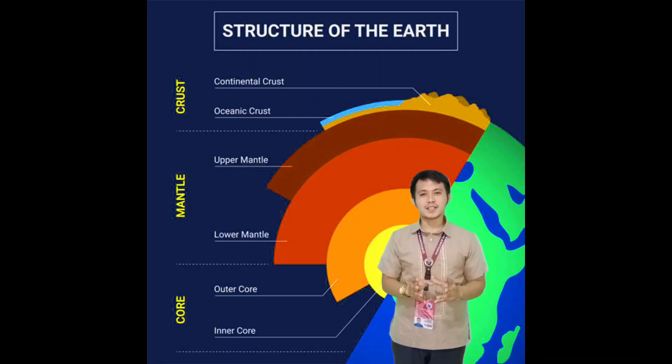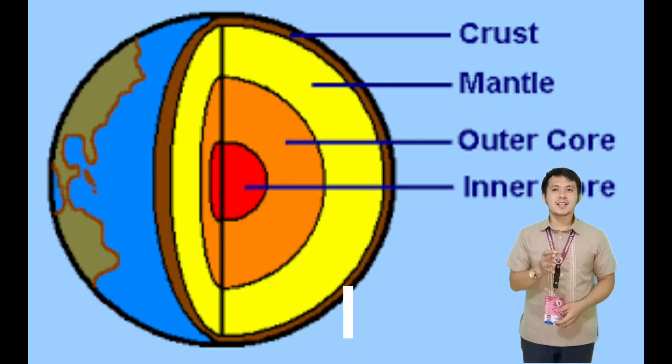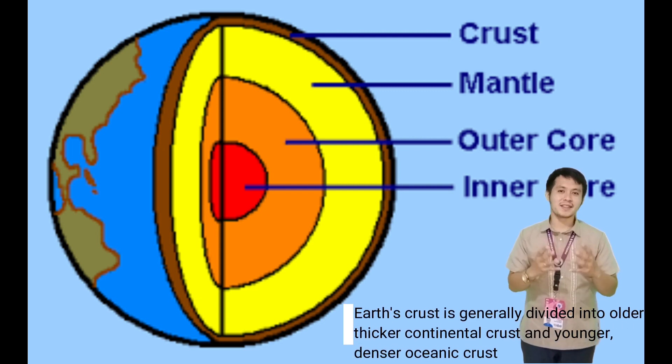The crust of the Earth is composed of a great variety of igneous, metamorphic, and sedimentary rocks. The crust is underlaid by the mantle.